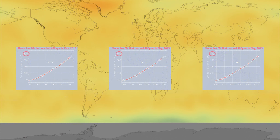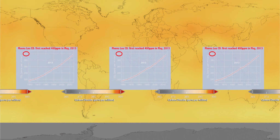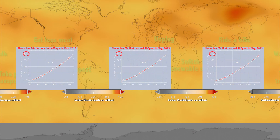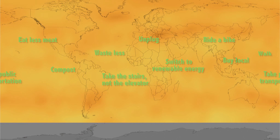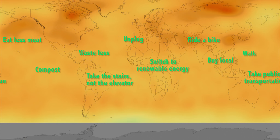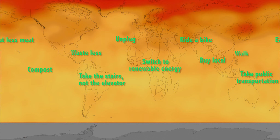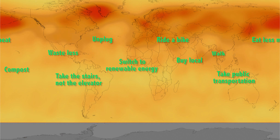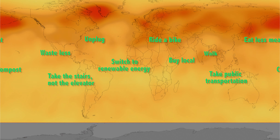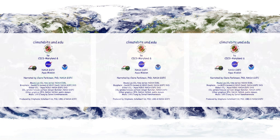Each of us has a carbon footprint — the amount of carbon we put into the air through the choices we make about energy consumption, food, and transportation. Each of us could make choices that would help to reduce our individual carbon footprints. For more information, visit climatebits.umd.edu.